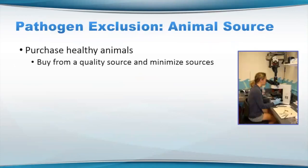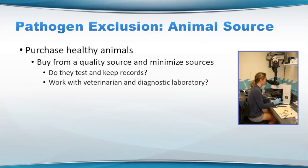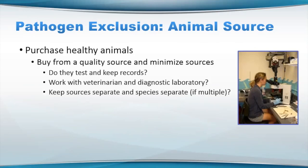Let's again look at animal source. You've got to really do your best to purchase healthy animals, which includes buying from a good source and minimizing sources if you can. Is your source testing and keeping records for specific organisms or pathogens of concern? Do they work with a vet and diagnostic lab? Do they have any reports? If you're dealing with multiple sources or have multiple species on your facility, is there a way to keep them separate? Sometimes some organisms may be more susceptible to certain pathogens than closely related organisms. Are you or are they using a protected water source? And do they have a biosecurity program as well?